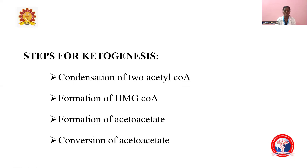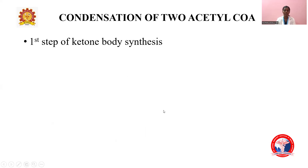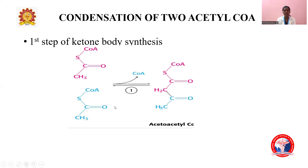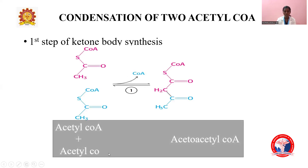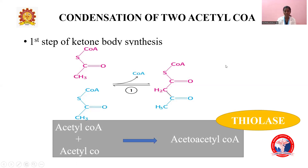There are four steps in ketogenesis. First is the condensation of two acetyl-CoA molecules. Second is the formation of HMG-CoA. Third is the formation of acetoacetate. Fourth is the conversion of acetoacetate to secondary ketone bodies. In the first step, two acetyl-CoA molecules are combined to form acetoacetyl-CoA with the help of the enzyme thiolase, and a coenzyme A is liberated.